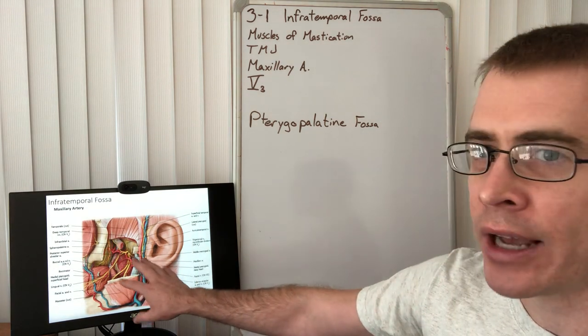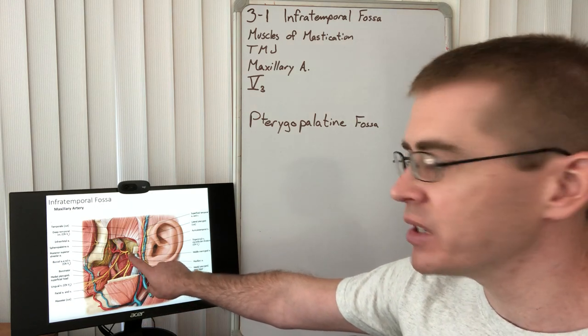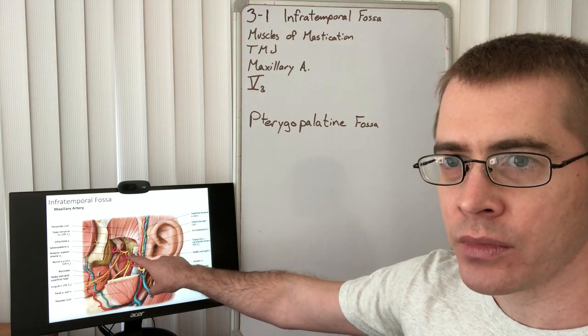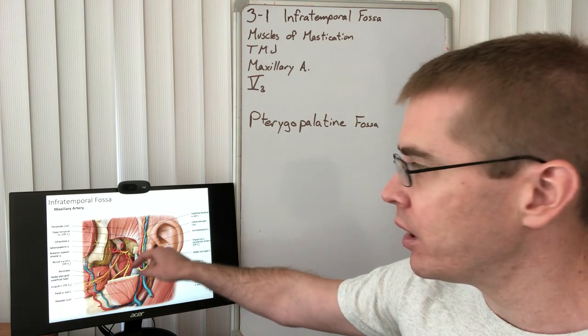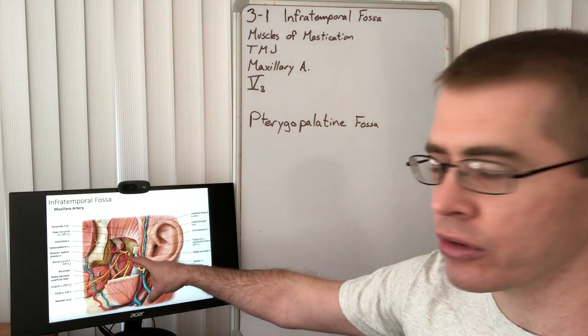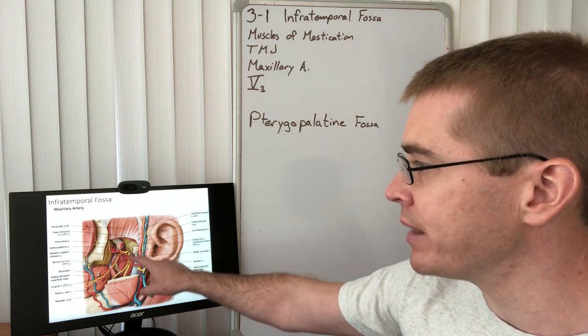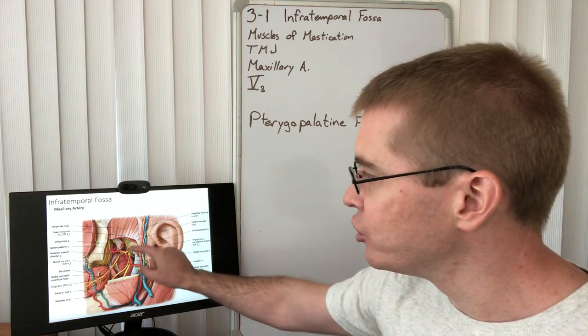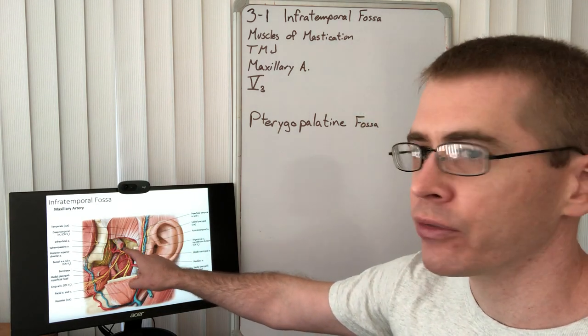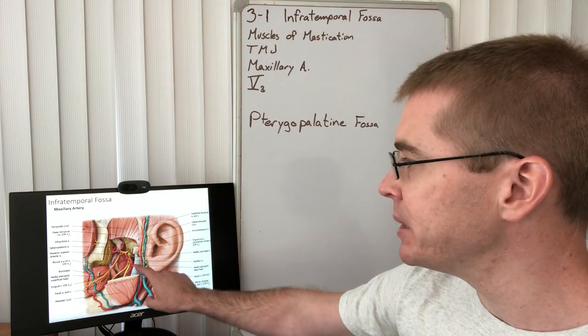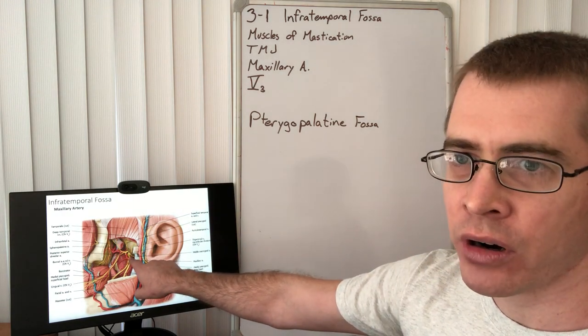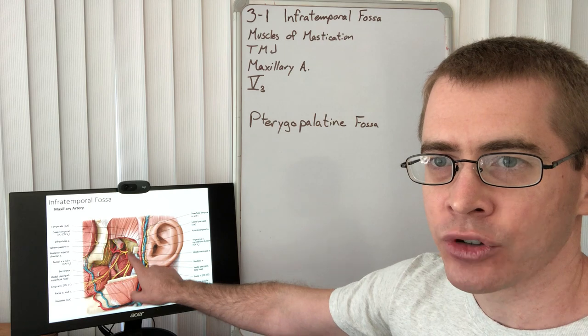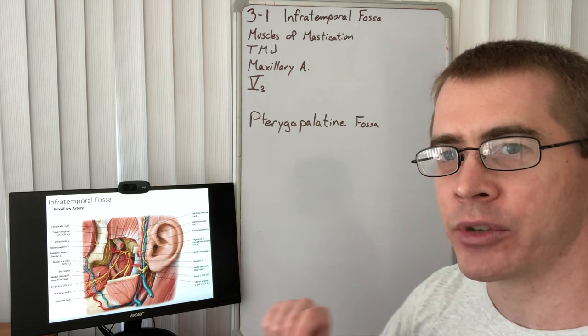Once we remove the lateral pterygoid we'll be able to see foramen ovale through which V3 is traveling, and at that point we'll see the branching pattern of all of this. Now if you can zoom in to this little portion right here by foramen ovale, we'll see the middle meningeal artery and where it is entering the cranium through foramen spinosum.